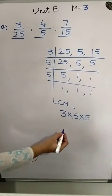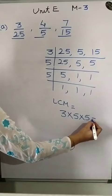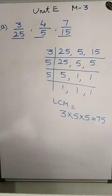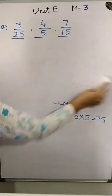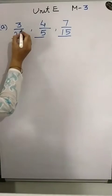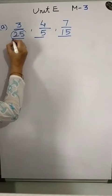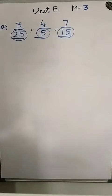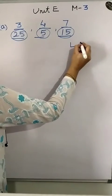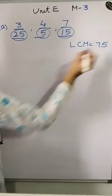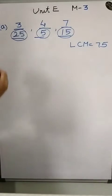So 3 × 5 = 15, and 15 × 5 = 75. The LCM is 75. Now we convert all denominators into 75.